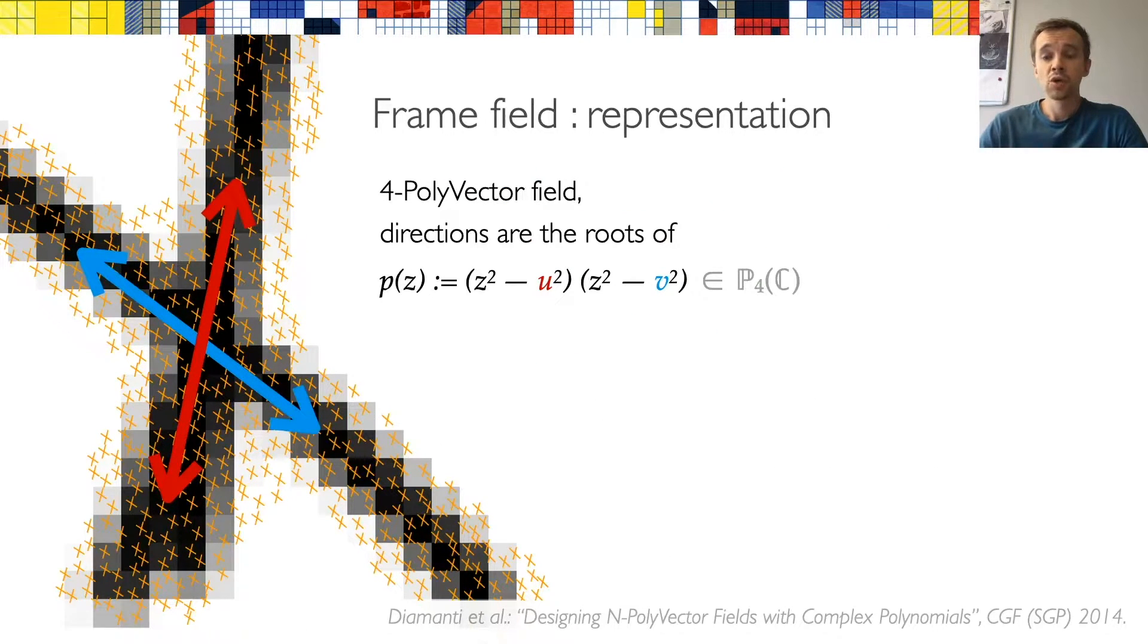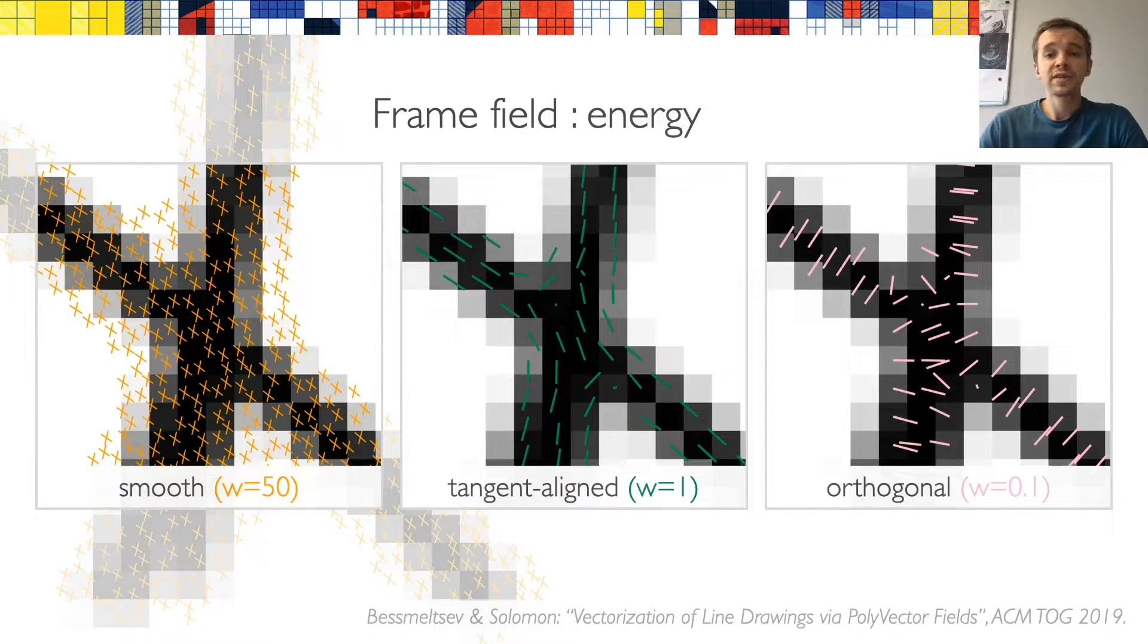Now that we have the mesh, we can compute the orientation field, and for that we use a frame field, which locally defines two independent directions. We use the polyvector representation of Diamanti and colleagues, and the field is defined on the vertices of the mesh. We then optimize it using the energy formulation of Bessmeltsev and Solomon. In a nutshell, this energy has three components responsible for smoothness, tangent alignment, and orthogonal regularization. The regularization is important since it prevents the field from collapsing into a line field.